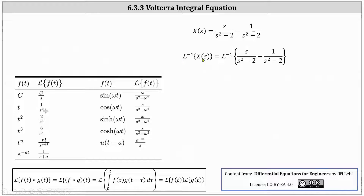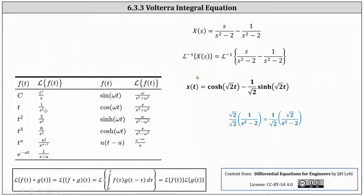The inverse Laplace transform of big X of s on the left is equal to x of t, which is what we are solving for. On the right, to find the inverse Laplace transform of s divided by the quantity s squared minus two, we use the formula in the table involving hyperbolic cosine, where the inverse Laplace transform of s divided by the quantity s squared minus omega squared is equal to hyperbolic cosine of omega t. In our case omega squared equals two, so omega equals square root two, giving us hyperbolic cosine of square root two t.